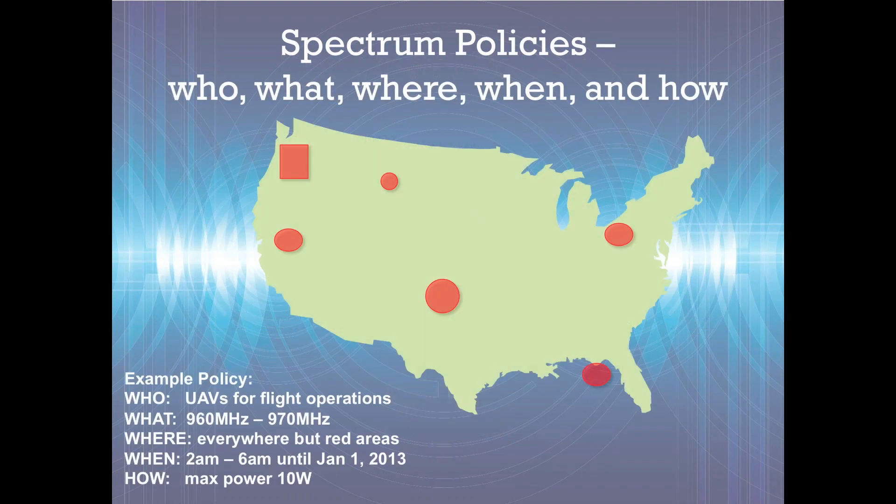For example, a spectrum policy might specify a spectrum band that is available throughout the United States, except for exclusion zones around existing users.